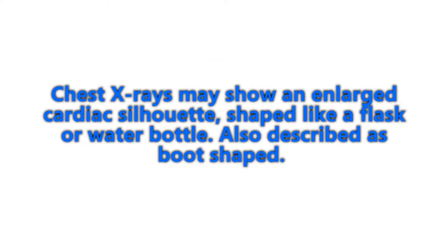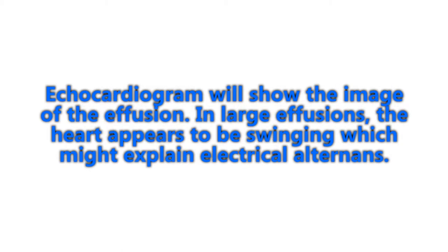On chest X-ray, findings can include an enlarged cardiac silhouette shaped like a flask or bottled water, also described as a boot-shaped silhouette. On echocardiogram, in large effusions the heart appears to be swinging, which may help explain electrical alternans.